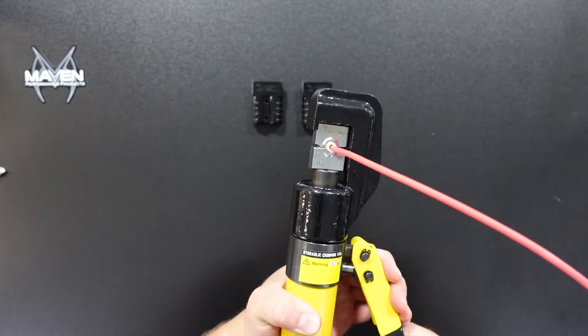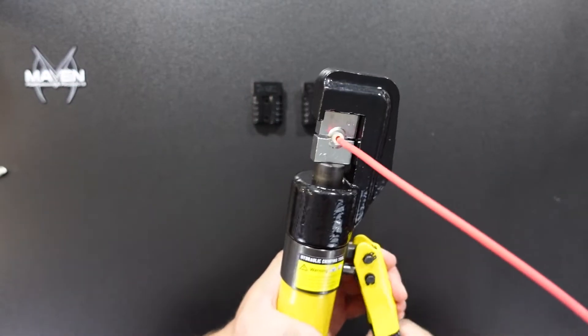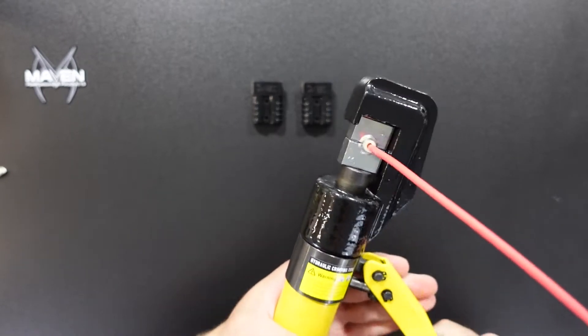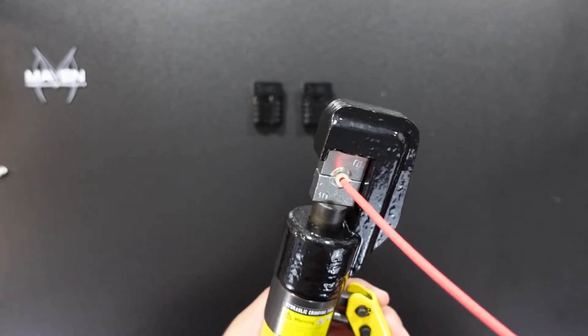So you slide your, strip your wire, slide it in, and we'll give you a good crimp. Crimp it all the way down. Okay, should be good.